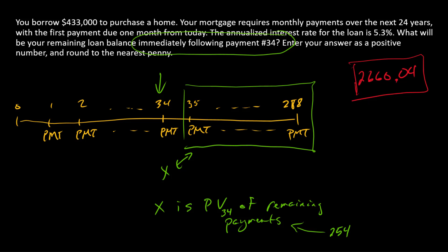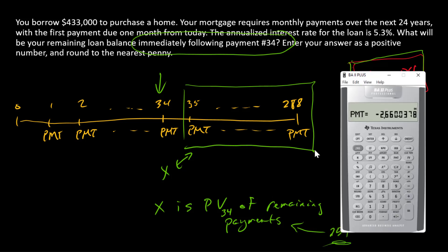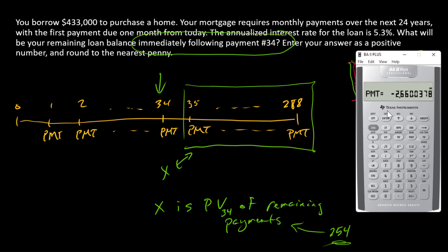We can solve for the payoff amount X by keeping the payment the same, keeping the interest rate the same at 5.3 divided by 12, and changing the number of payments to 254, then solving for PV in the financial calculator. Since everything is already entered, I just change N to 254, then compute PV. The answer — X, the payoff — is $405,638.12.